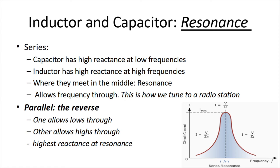And then in parallel, it's the reverse. One will allow lows through. The other one will allow highs through. And we get the highest reactance at resonance. So that will filter out a frequency for us. And just flip that chart upside down.